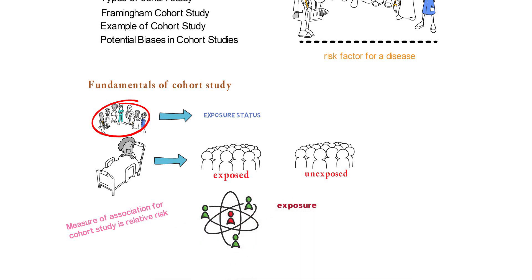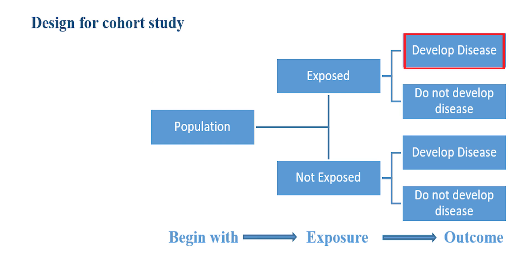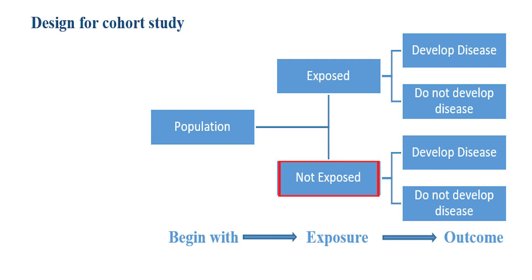The direction of cohort study is from exposure to outcome. The design for cohort study is shown in this slide, in which the population is divided into exposed and non-exposed groups. We then follow up both groups. In the exposed group, some participants develop diseases and some do not develop diseases.